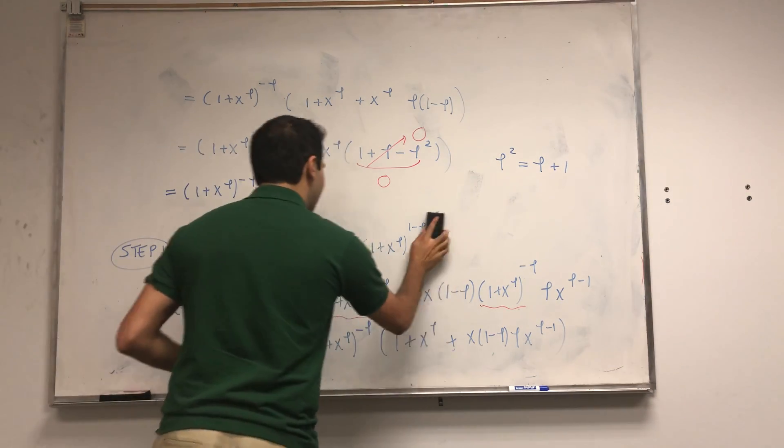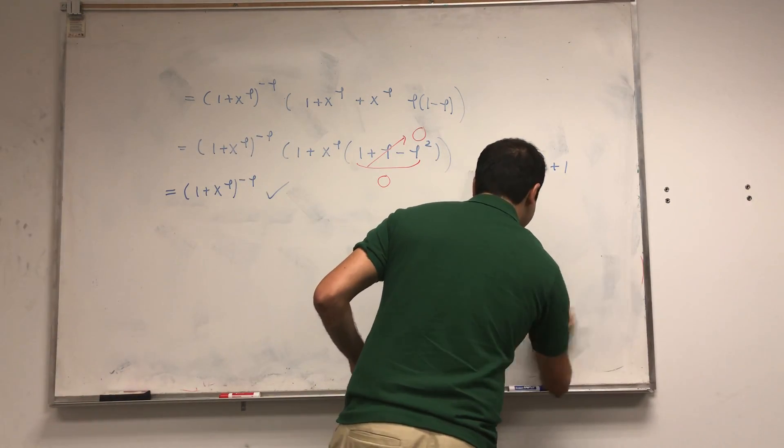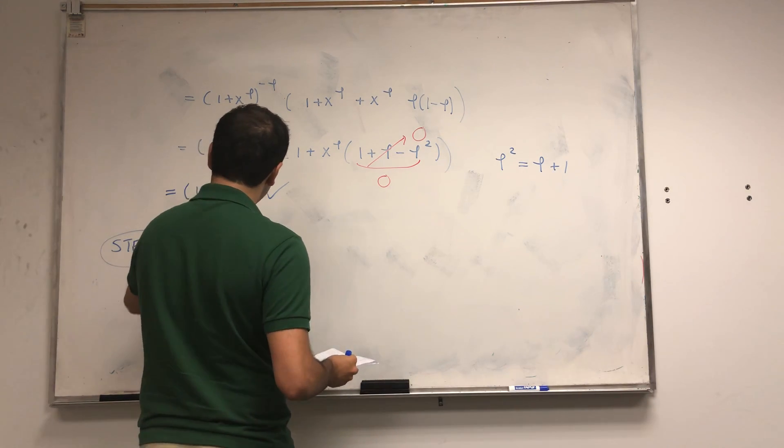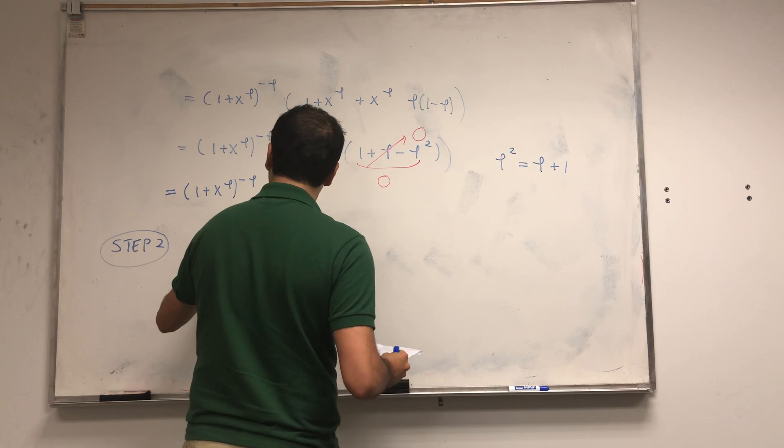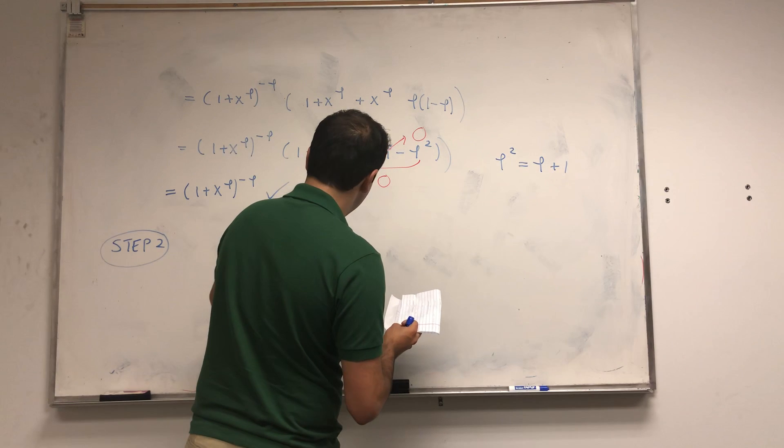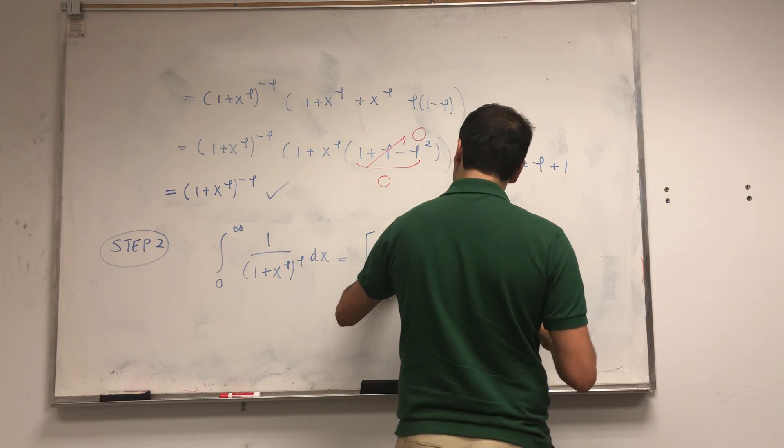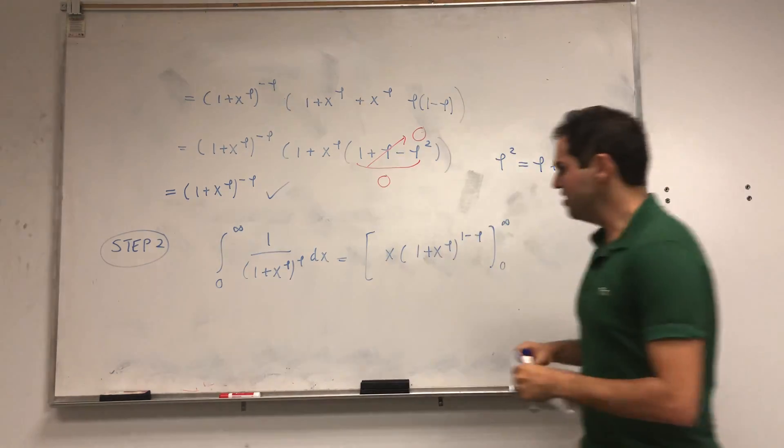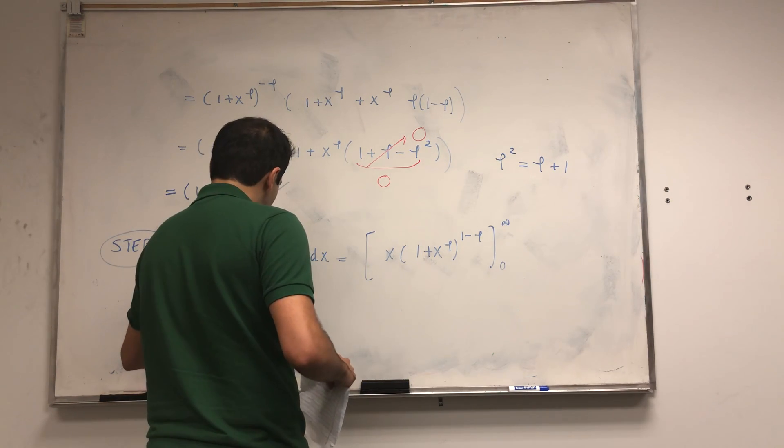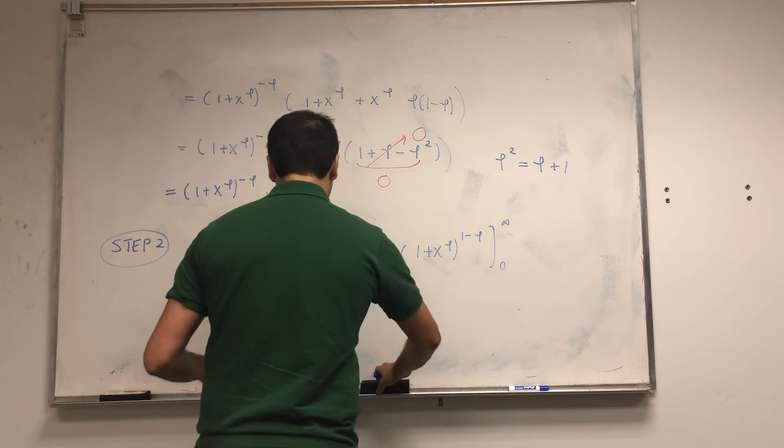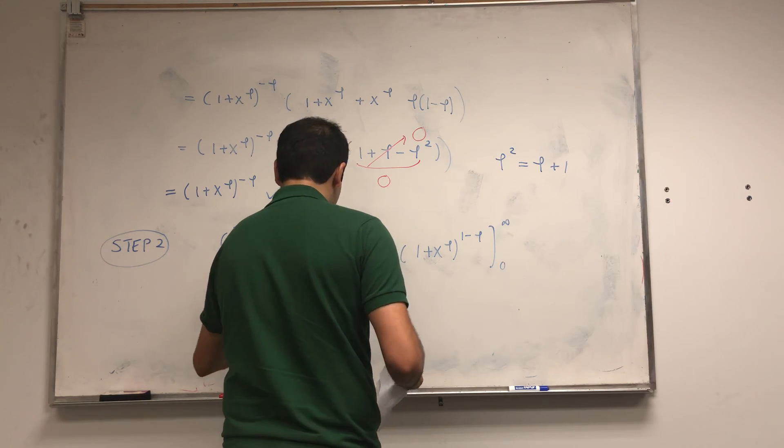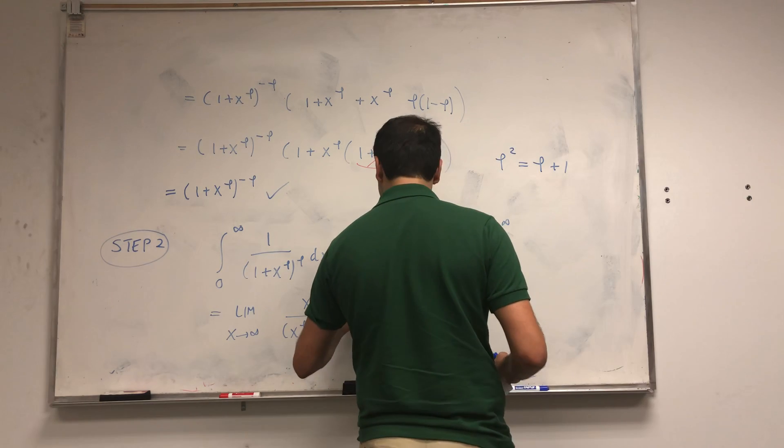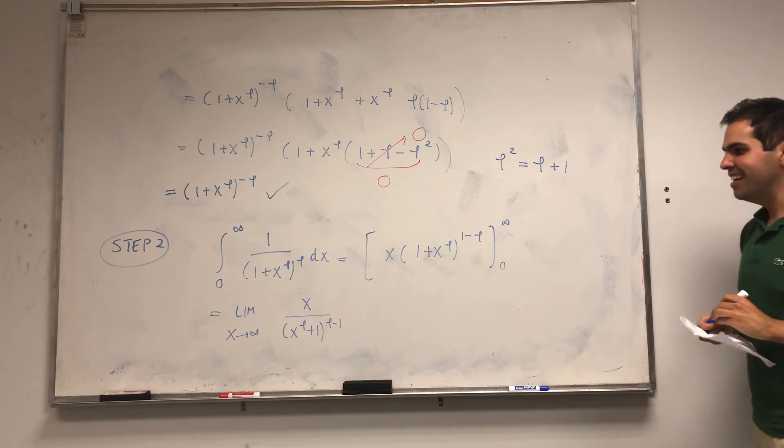Now we just need to calculate the integral. Step two: the integral from zero to infinity of 1/(1 + x^phi)^phi dx. Now that we have an antiderivative, it's just x(1 + x^phi)^(1-phi) from zero to infinity. This tells us on the one hand we need to calculate the limit as x goes to infinity of x times—let's write it this way—x times (x^phi + 1)^(phi-1), because this becomes positive. The other term you just plug in zero, so you get zero.